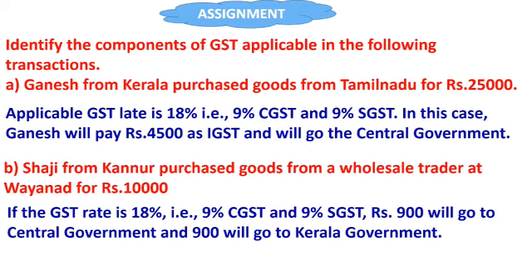For example, for a purchase of Rs. 25,000, the applicable GST rate is 18% — that is 9% CGST and 9% SGST. Ganesh will pay Rs. 4,500 as IGST and that will go to the central government. For goods purchased from a wholesale trader at Wynad for Rs. 10,000, if the GST rate is 18%, then 9% CGST means Rs. 900 goes to the central government and 9% SGST means Rs. 900 goes to the Kerala government.